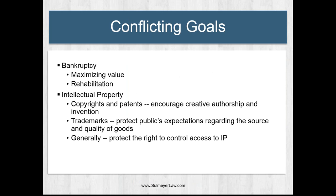Conflicts arise at the point where intellectual property or IP law and bankruptcy law intersect. This results in issues requiring special consideration in bankruptcy cases involving intellectual property assets, and these issues spring in large part from the conflicting goals of bankruptcy and intellectual property law. In bankruptcy we have a primary goal of maximizing the value of the bankruptcy estate. In chapter 11 reorganization cases there's also the goal of rehabilitation of the debtor, though many chapter 11 cases these days have actually taken the form of a liquidation through a going concern sale, frequently effectuated through Section 363 of the bankruptcy code. But the primary bankruptcy goal is maximizing the value of the bankruptcy estate.